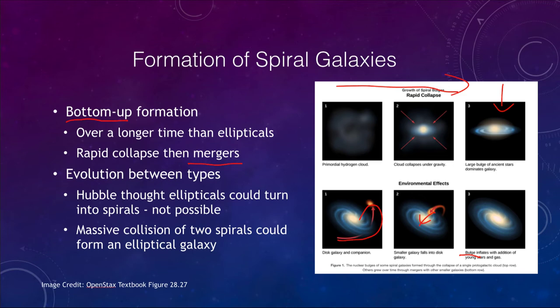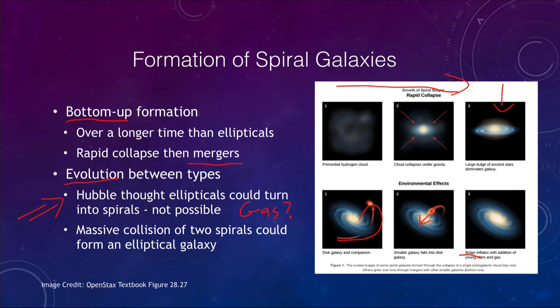This can possibly explain the different classifications of spiral galaxies, since spiral galaxies are classified by how large their bulge is. That could tell us something about the number and type of mergers they have gone through. We can also get evolution between types of galaxies. It was once thought that elliptical galaxies could turn into spirals, but that's not really possible - where does the gas come from? A spiral galaxy has cold gas and dust; an elliptical galaxy doesn't.